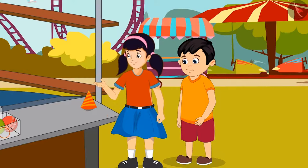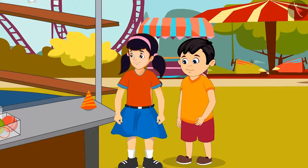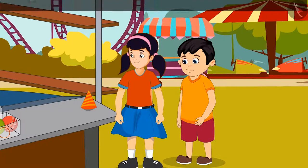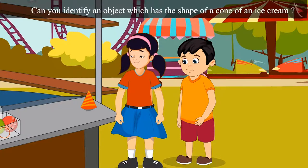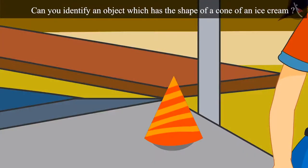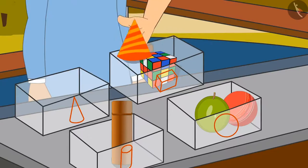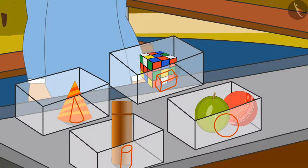Wow Chotu, now I will put the last item. This shape is like an ice cream cone. Children, can you identify an object which has the shape of an ice cream cone? You identified it correctly. This is a cone-like object. Chotu and Neha identified the shapes of all the objects and placed them in different boxes.